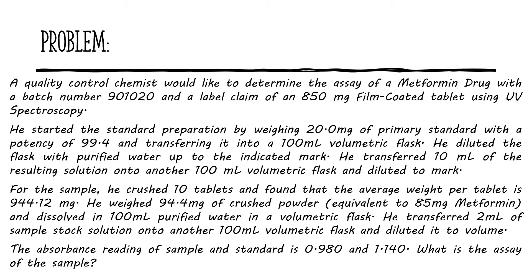Here is the problem: a quality control chemist would like to determine the assay of a metformin drug with batch number 900-1020 and a label claim of 850 milligrams film-coated tablet using UV spectroscopy. He started the standard preparation by weighing 20.0 milligrams of primary standard with a potency of 99.4% and transferring it into a 100 ml volumetric flask, diluted with purified water up to the indicated mark.